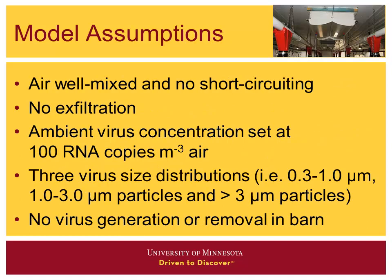We assumed the air in the barn is well mixed with no short-circuiting — short-circuiting is when fresh air zips in and out without picking up any pollutants. We had no exfiltration. For convenience, we used an ambient air virus concentration of 100 RNA copies per cubic meter outside, since we don't have a measured number for ambient concentrations. We used three different size distributions, and we had no virus generation or removal inside the barn — whatever came in stayed and then went out. There probably was settling, but we didn't account for that.